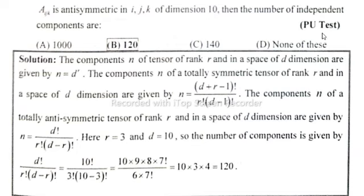In this lecture, I will solve Punjab University Test MCQs. Aijk is Antisymmetric in i,j,k of dimension 10, then the number of independent components are.